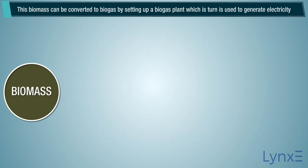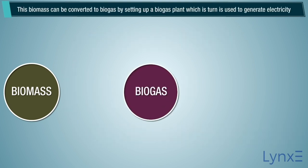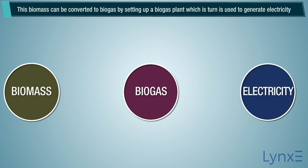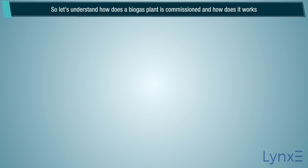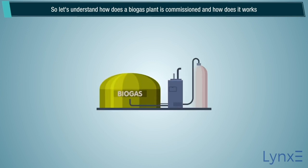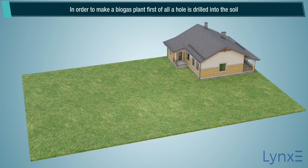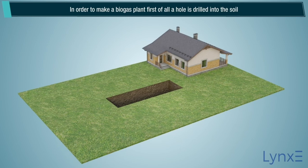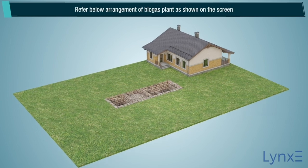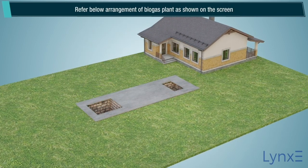This biomass can be converted to biogas by setting up a biogas plant, which in turn is used to generate electricity. Let's understand how a biogas plant is commissioned and how it works. In order to make a biogas plant, first of all a hole is drilled into the soil. Refer to the arrangement of the biogas plant as shown on the screen.